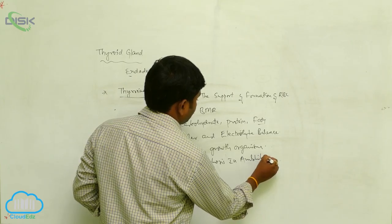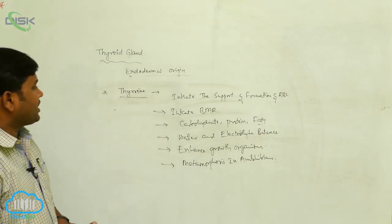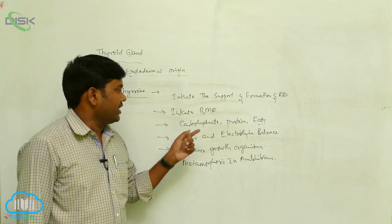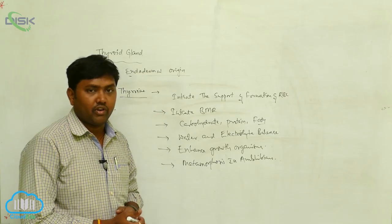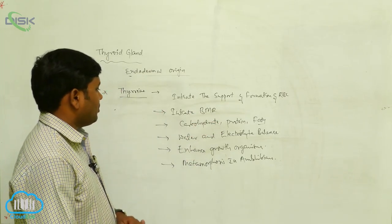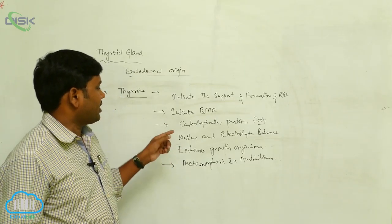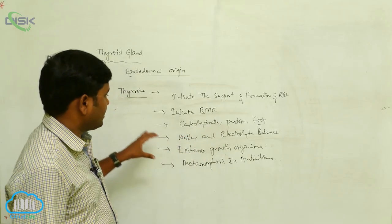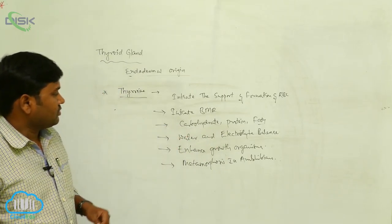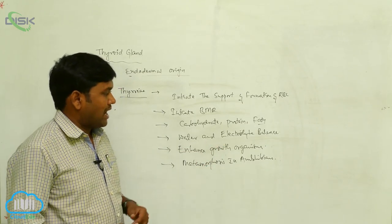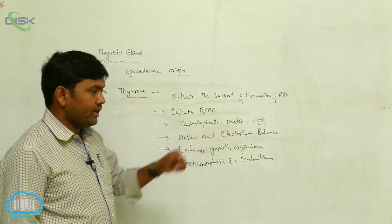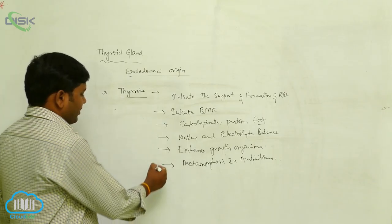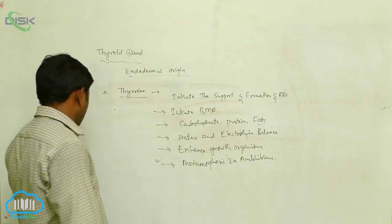The most important characteristic of thyroxine is that it controls metamorphosis in amphibians. In summary, thyroxine initiates BMR, supports RBC formation, controls carbohydrate, protein, and fatty acid metabolism, maintains water and electrolyte balance, and enhances organismal growth.